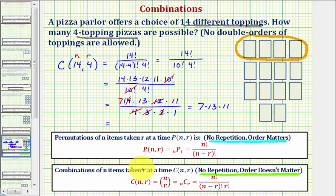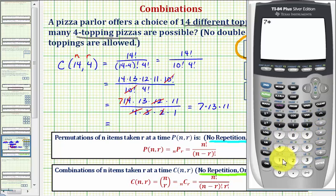And now we'll go to the calculator. So here, 7 times 13 times 11 is equal to 1001. And while we're here, let's also evaluate the original combination on the calculator.